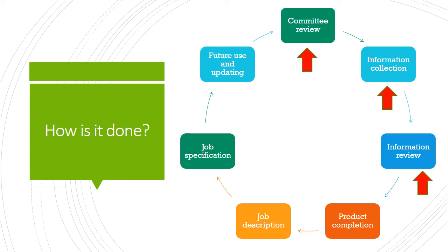The information review involves assembling and reviewing the collected information with employees and the job analysis committee to ensure it is factually correct and complete and presents a clear picture of the job. Product completion is the fourth step, involving the completion of whatever product management has designed — such as the job description or job specification. Job analysis may also be used for job evaluation, salary and wage purposes, to determine training and development needs, and to create tests for employee selection.